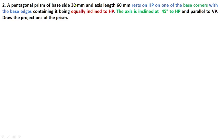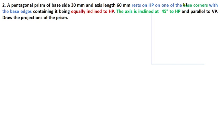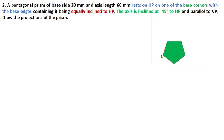Before considering this as an entire pentagonal prism solid, for identifying the position of the pentagon, we can assume the pentagon as a plane surface. So in HP and VP, while one of the base corners is on HP, this is how we can draw this plane surface with the base corner touching HP.